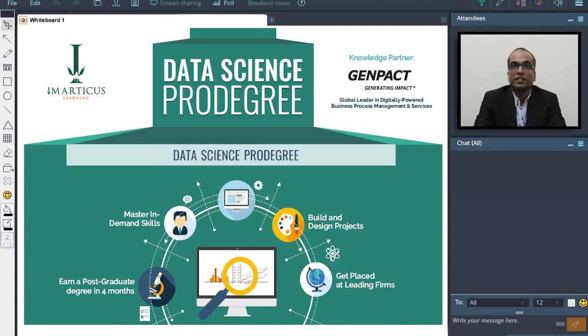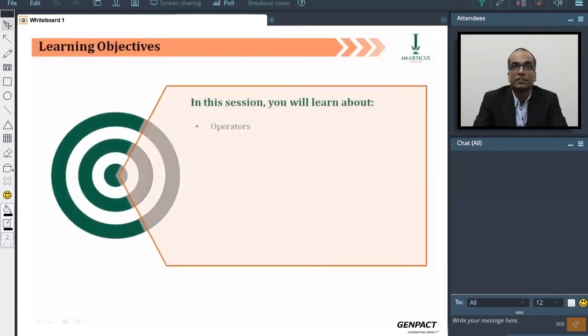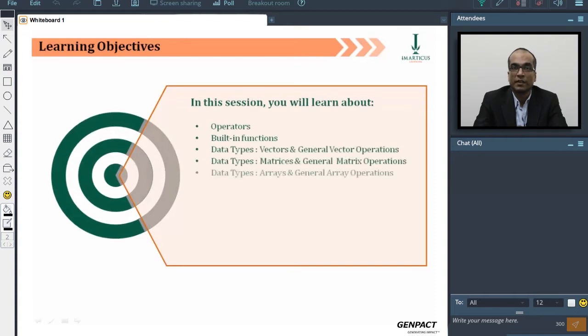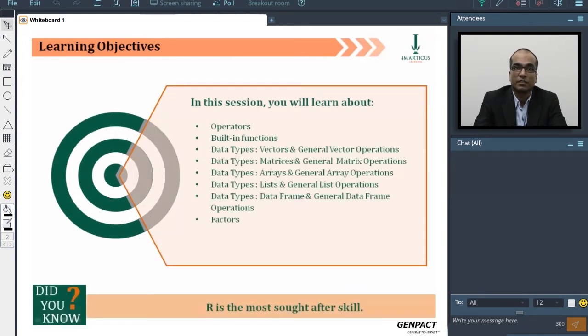We will be talking about basic operations in R now. The learning objectives in this session would be understanding operators within R, built-in functions, data types including vectors and general vector operations, data types like matrices, general matrix operations, arrays, lists, and data frames. We will also be touching upon factors as an aspect.